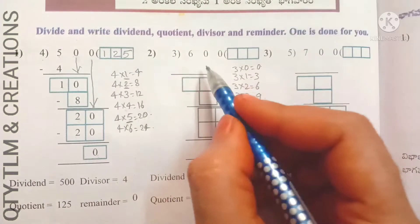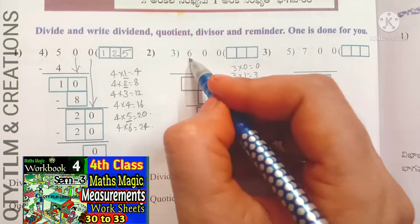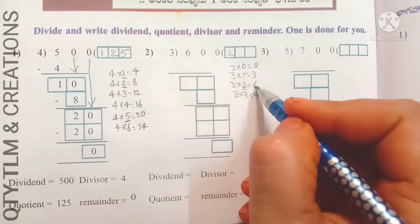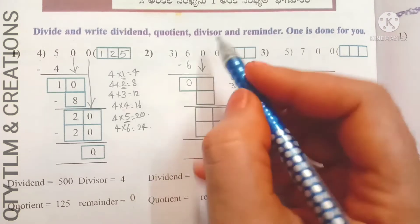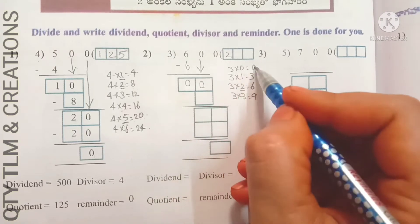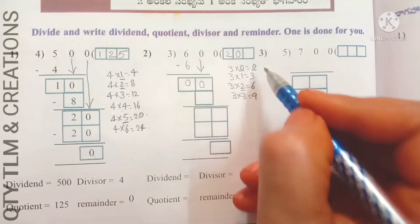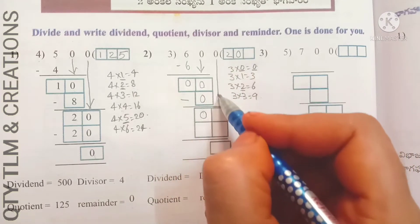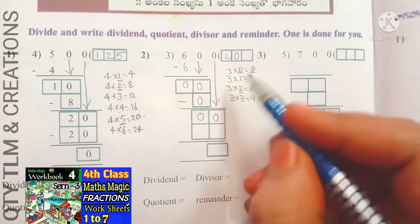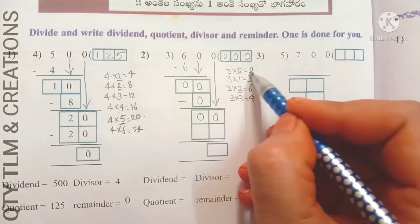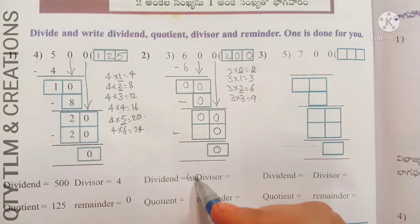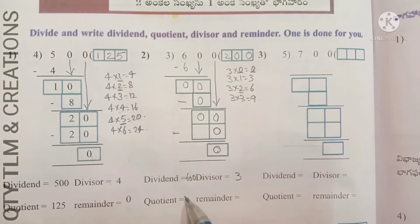Next: 600 divided by 3. Division starts from the highest place value, which is 6. 3 divides 6 for 2 times. Write 2 in the quotient's place and 6 under 6, subtract: we get 0. Bring down 0; write 0 in the quotient's place and 0 under 0, subtract: we get 0. Bring down the next 0 similarly. Dividend is 600, divisor is 3, quotient is 200, remainder is 0.